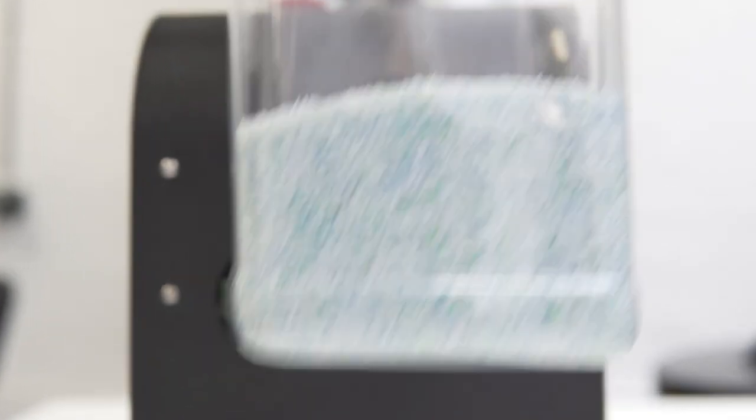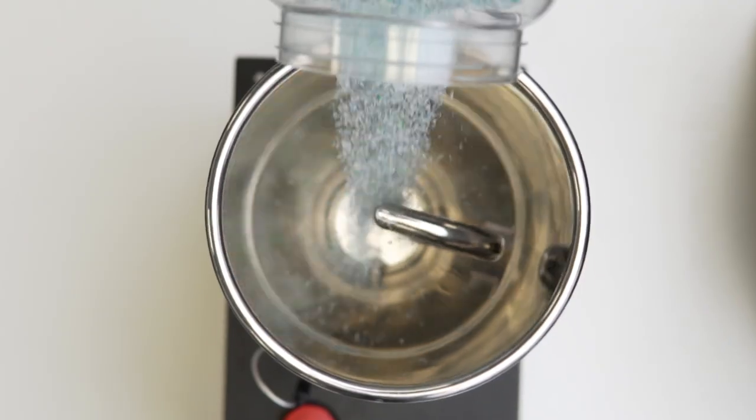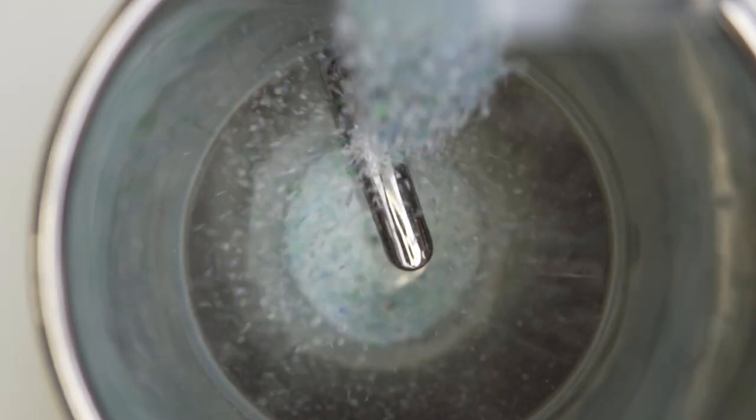Next, the shredded plastic needs to be dried. For hygroscopic materials like PET, this step is necessary in order to avoid any inconsistencies during the melting process.